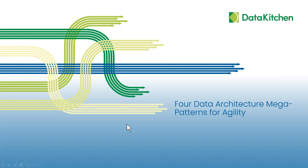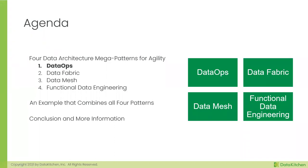The four patterns I'm going to talk about today: the first is DataOps, which my company focuses on. The second is a new term that analysts like Gartner and Forrester are talking about called a data fabric — I'll talk about why a data fabric alone doesn't lead to agility. Then I'll talk about something called a data mesh, which brings domain-driven design into data and analytics. And the third is functional data engineering. These ideas originally emanated from dealing with complicated software systems.